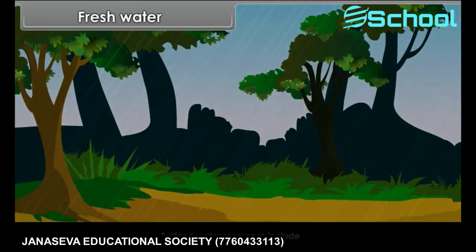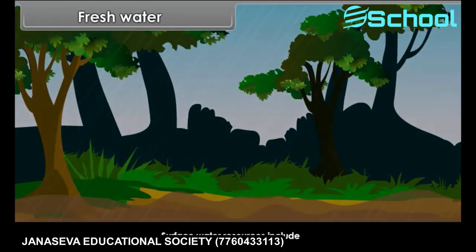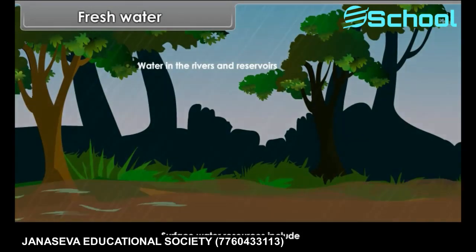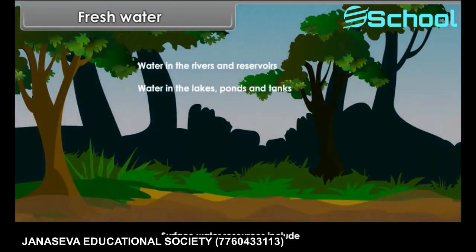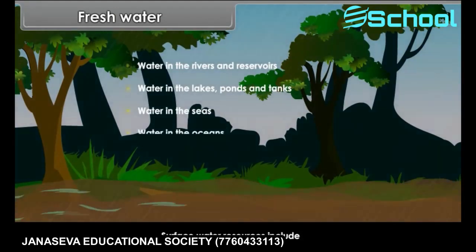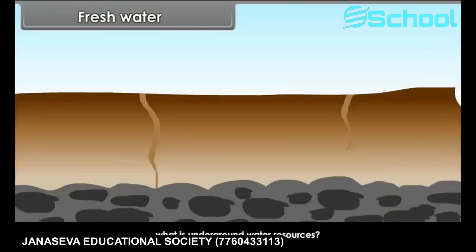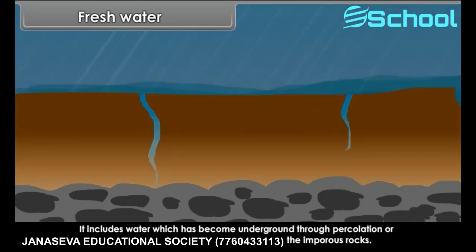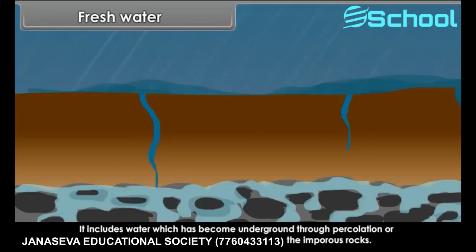Surface water resources include water in rivers, reservoirs, lakes, ponds, tanks, seas, and oceans. Underground water resources are water which has gone underground through percolation or seepage and is lying in porous rock above imporous rocks.